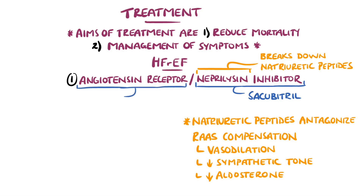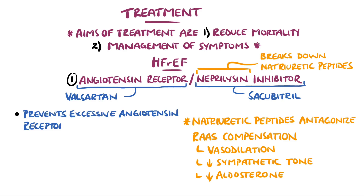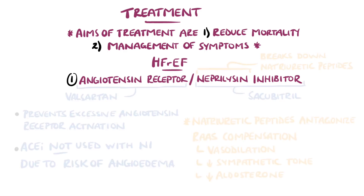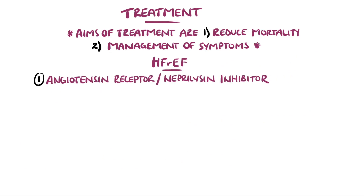Sacubitril is an example of this class of drug. It is used in combination with valsartan, an angiotensin receptor inhibitor. This is because neprilysin breaks down angiotensin 2; therefore, you'll have higher levels of angiotensin 2 if it is inhibited, so angiotensin receptor blockade is needed. The reason angiotensin receptor blockers and not ACE inhibitors are used is because neprilysin also breaks down bradykinin, and ACE inhibitors also prevent the breakdown of bradykinin. This means that using an ACE inhibitor would give very high levels of bradykinin and a high risk of angioedema. Together, these make up the first agent in a class of drugs known as the angiotensin receptor neprilysin inhibitors.